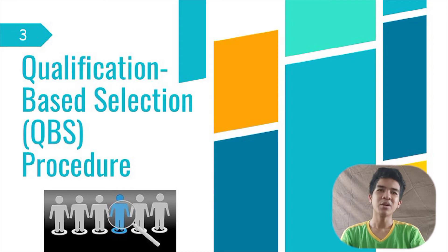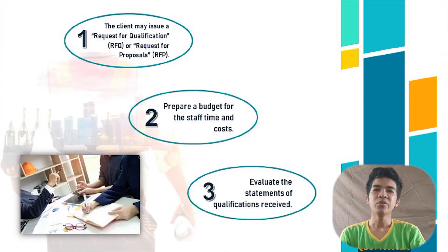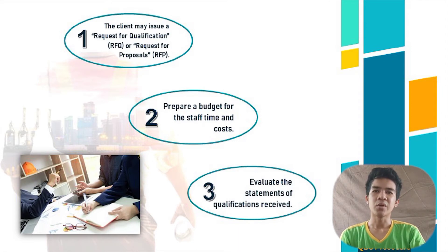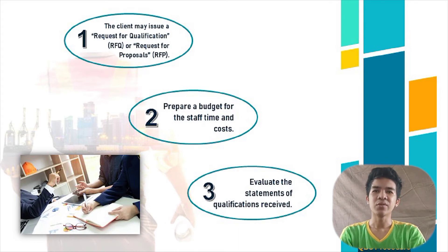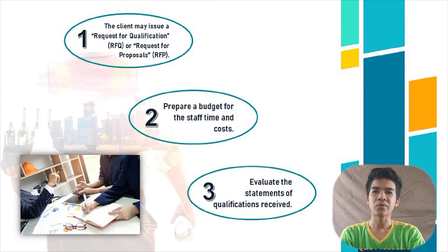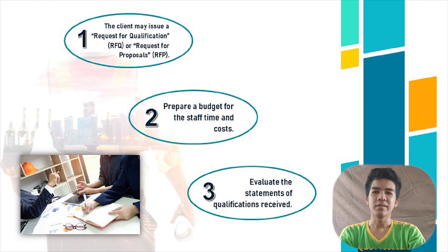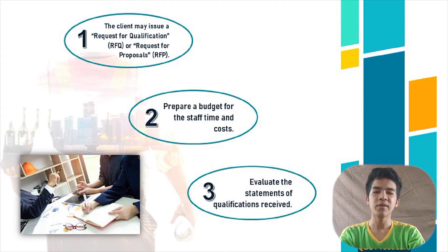The selection procedure can be modified to suit the circumstances. Here are the usual steps. First, the client may issue a Request for Qualifications (RFQ) or Request for Proposal (RFP). RFQs are normally used to ascertain general qualifications in a selected area of expertise, while RFPs are used to seek civil engineers and create short lists for a specific project. Second, prepare a budget for staff time and cost. Third, evaluate the statements of qualifications received and select at least three civil engineers or firms that appear to be the best qualified.